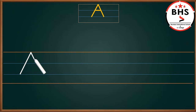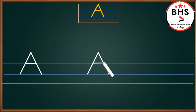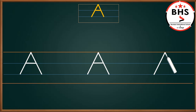Again, make one more slanting line from red line to blue line. Then make another slanting line from red line to blue line. Again, make one more slanting line from red line to blue line. And then make a sleeping line on the blue line.